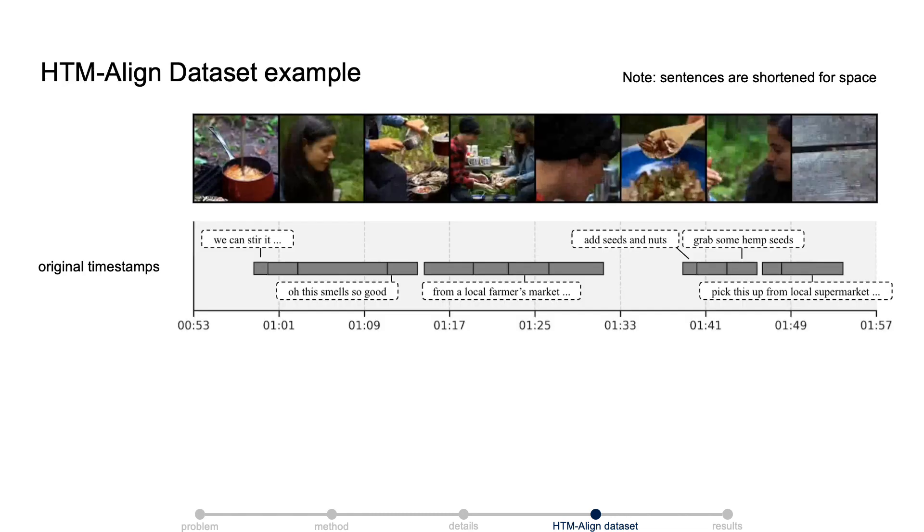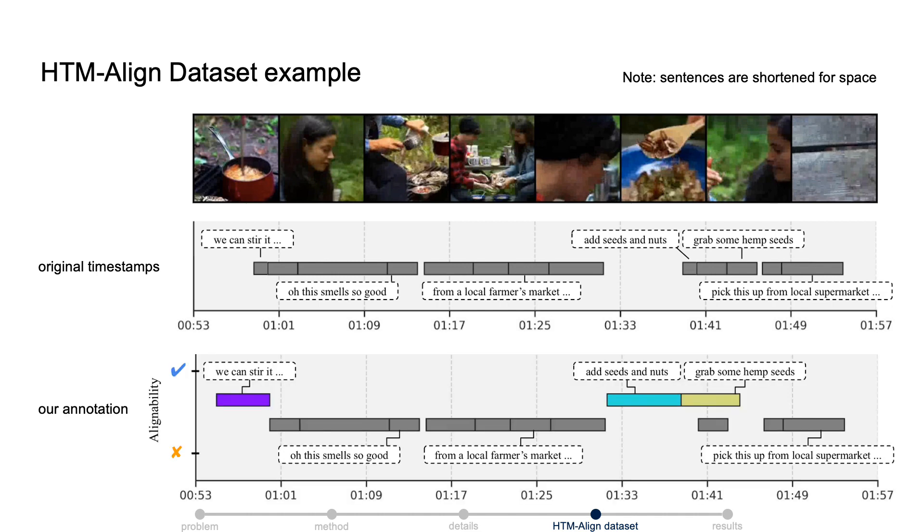This is an example video from HTM Align Dataset. We can see that most of the sentences are not visually alignable. And for those alignable ones, their visually corresponding timestamps are usually not their original timestamps.